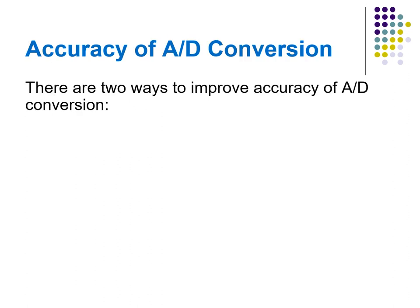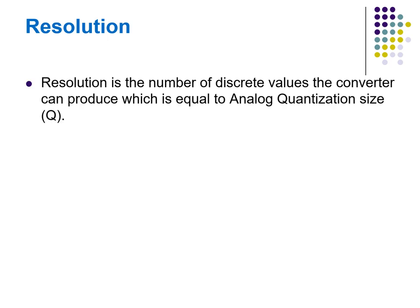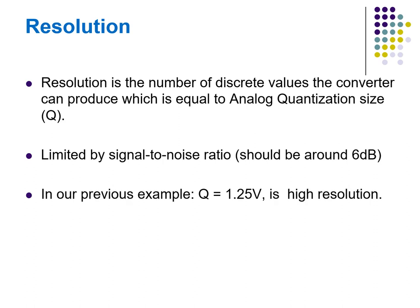Accuracy of analog to digital conversion can be improved in two ways. Number one: increasing the resolution improves accuracy in measuring the amplitude of the analog signal. Number two: increasing the sampling rate increases the maximum frequency that can be measured. Resolution is the number of discrete values the converter can produce; it is limited by the signal-to-noise ratio, which should be around 6 dB. In our example, Q = 1.25 V is high resolution; a lower resolution would be 2.5 V if we use a 2-bit converter.